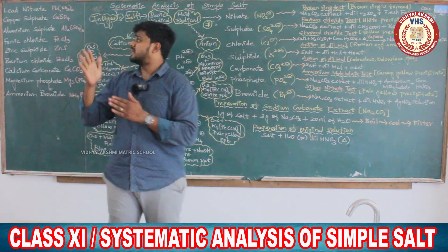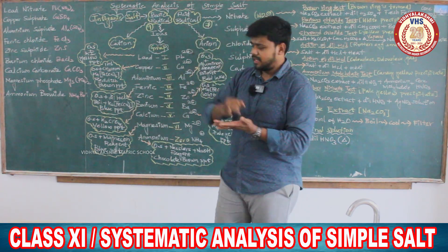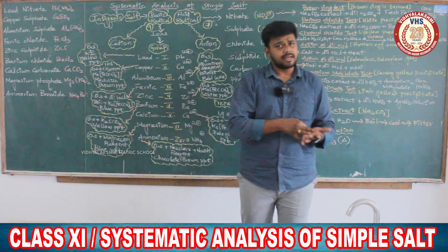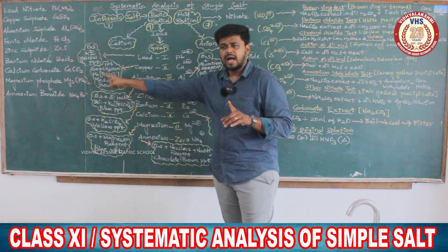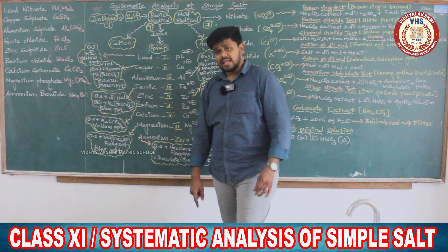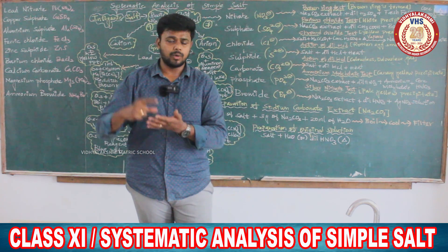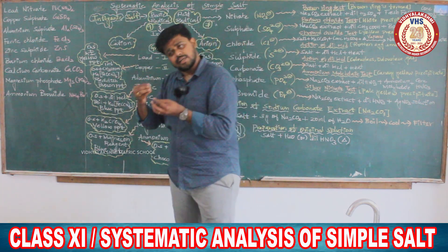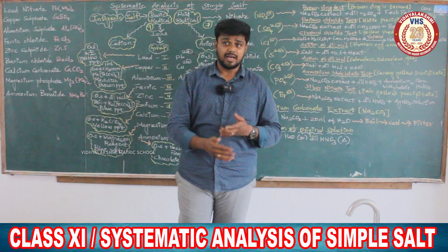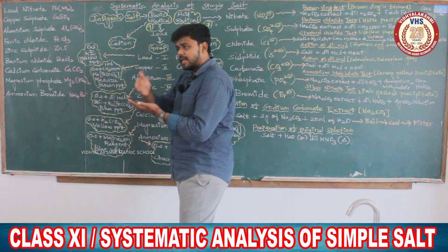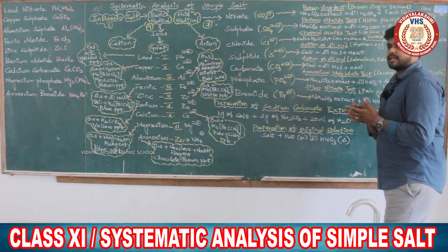If you call the salt lead nitrate: the acid radical is nitrate and the basic radical is lead. The basic radical lead belongs to group 1. The confirmatory test — what is the confirmatory test for lead? You can do it with the reagent sequence, including the chromyl chloride test using potassium dichromate.